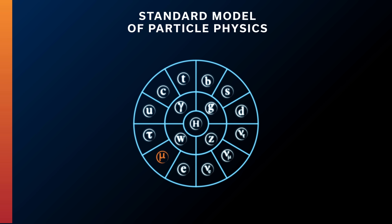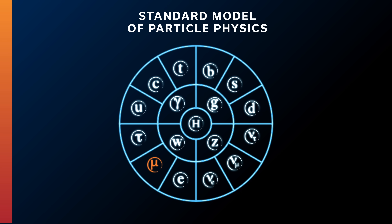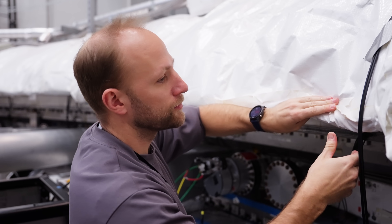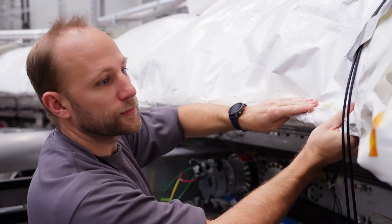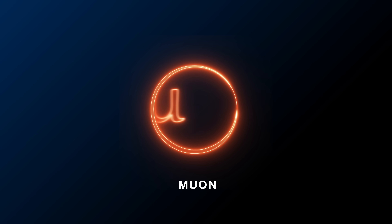The Standard Model of particle physics is essentially the collection of all the knowledge we have today about particles. It's a mathematical framework, but you can think of it as all the particles we know and the interactions described in this theory. We test the Standard Model through this experiment by using it to predict the G-factor of the muon, which describes how the spin of the muon interacts with a magnetic field.